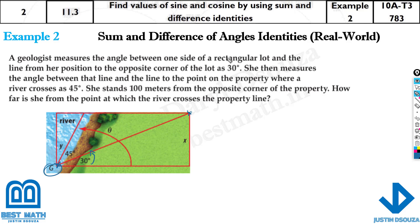So this is the angle that they're talking about. She then measures the angle between that line and the line to the point on the property where river crosses at 45 degrees. So from this line to another line, this is the point where the river is crossing. That is the line they have told where river crosses at 45 degrees. Here the river crosses. And this is given 30, 45.